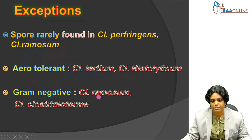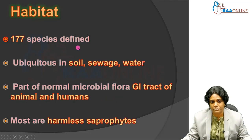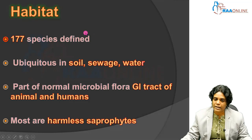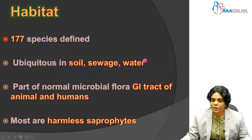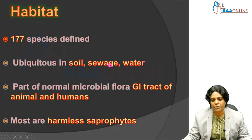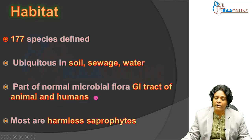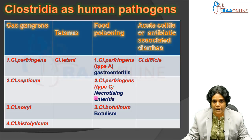Coming to the habitat of this genera, there are about 177 species of Clostridium as defined. They are ubiquitous in nature — that is they are present in the soil, sewage, as well as in water. They are part of the normal microbial flora, present in the gastrointestinal tract of both animals and humans. Many species of Clostridia are harmless saprophytes; only a few species are considered human pathogens.